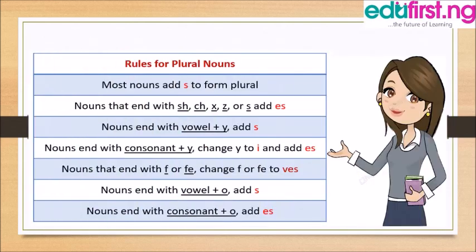There are a few basic rules to remember when changing a singular noun to the plural noun. The general rule is by adding -s. For example, boy becomes boys, girl becomes girls.